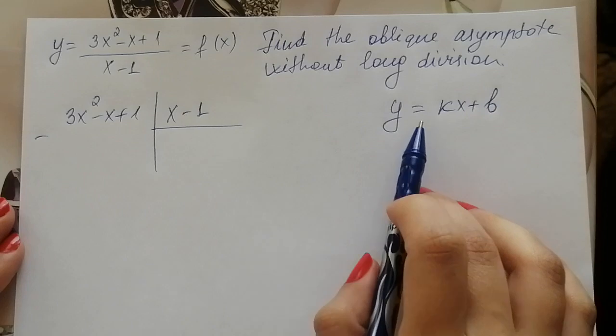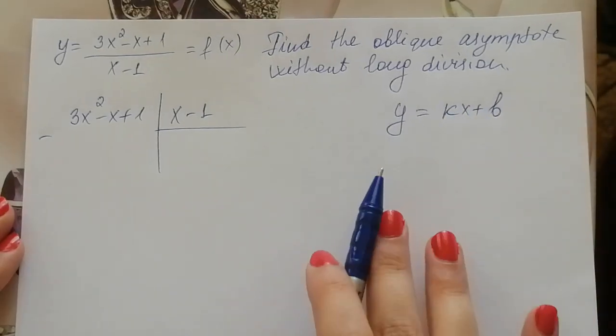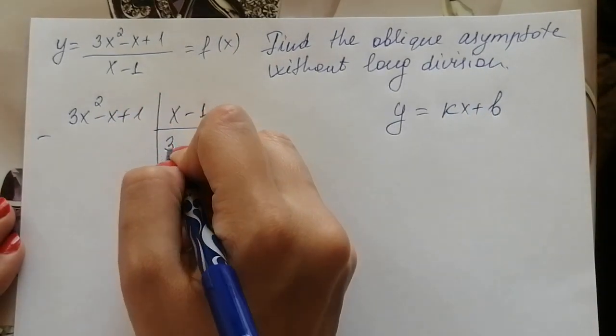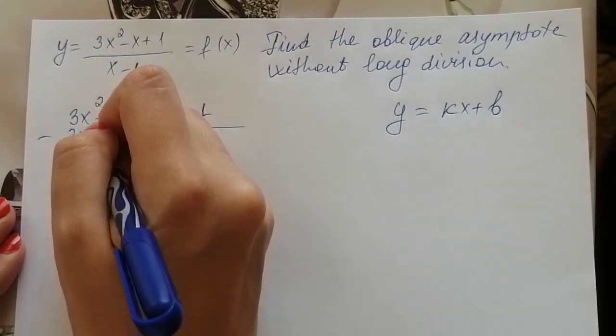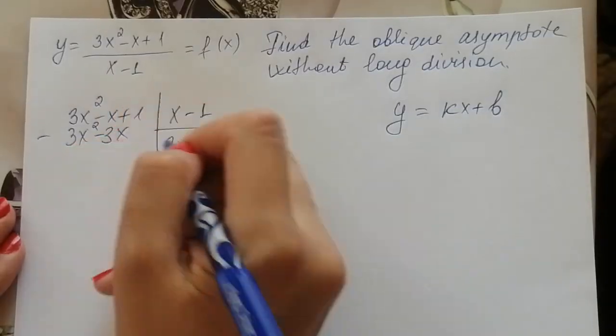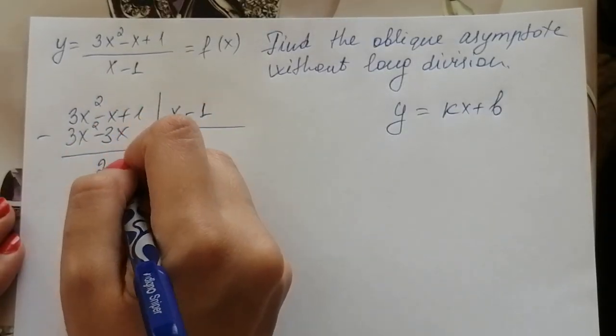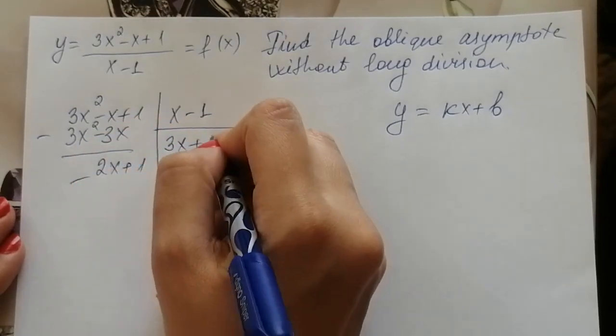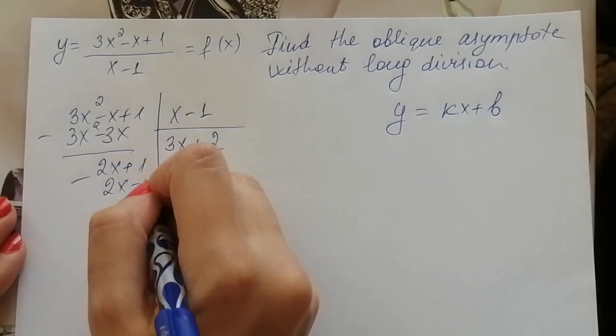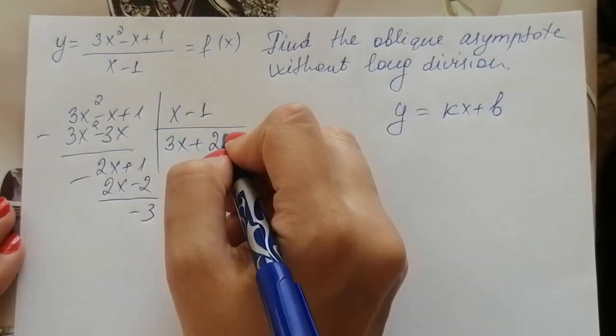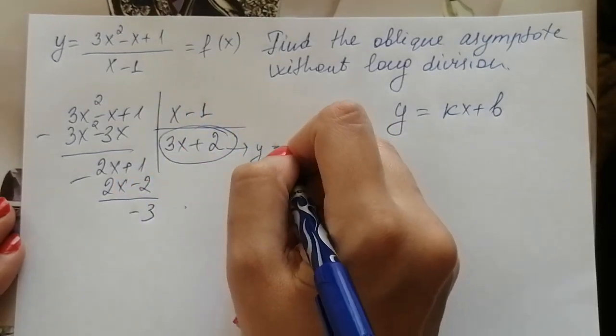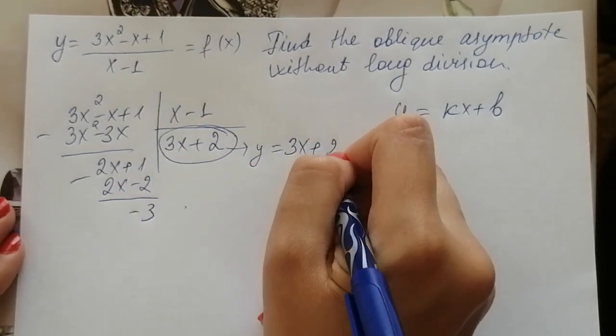Oblique asymptote is in the form of kx plus b, and this part is your oblique asymptote by long division.